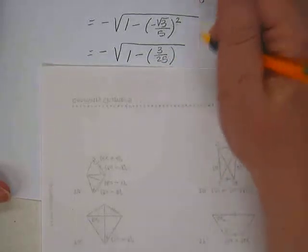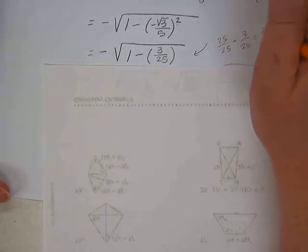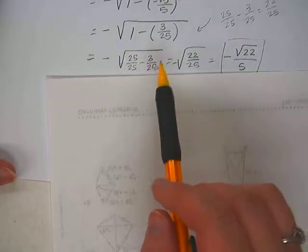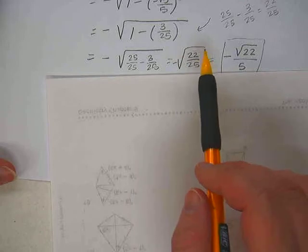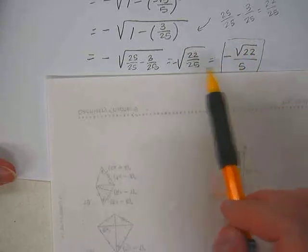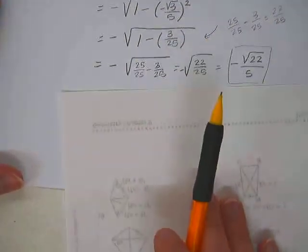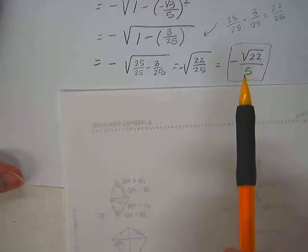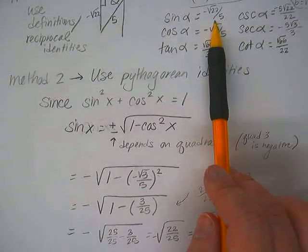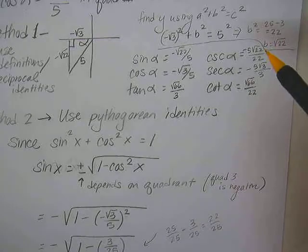So what's 25 over 25 minus 3 over 25? 22 over 25. But that's still in the square root. So then we still have the square root of 22 over 25 and we have to simplify that. Well, the square root of 22 doesn't simplify, but the square root of 25 does and it's 5. And we also need to remember what we determined at the very beginning, that because it's in quadrant 3, sine is negative. So our final answer for sine is negative square root of 22 over 5. Did we get the same answer either way that we did when we did it this way? Yeah.